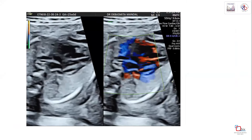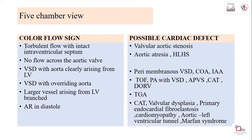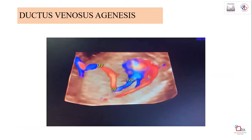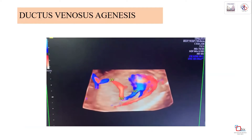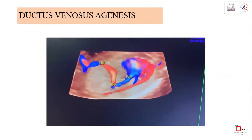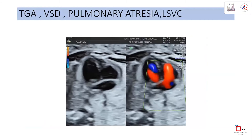Color flow signs can indicate possible cardiac defects. Intraventricular communication can be identified as a VSD. Turbulent flow suggests valvular aortic stenosis, while absent flow indicates aortic atresia. In a case of ductus venosus agenesis, the IVC flows directly into the right atrial vestibule without the ductus venosus entering the right atrium - the ductus venosus instead drains directly to the IVC.